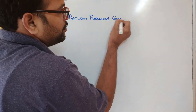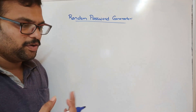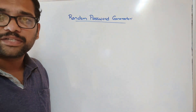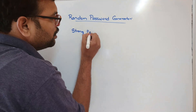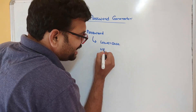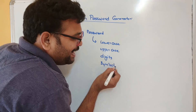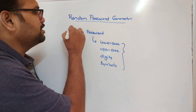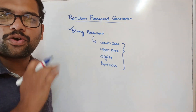We know that passwords are used everywhere — for email transactions, financial transactions, and more. Now, how do we get a good password? A strong password is a combination of lowercase characters, uppercase characters, digits, and symbols. Any password combining all four of these categories is called a strong password.